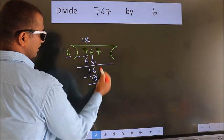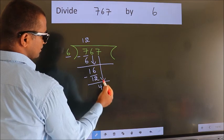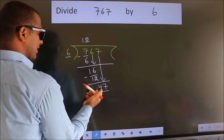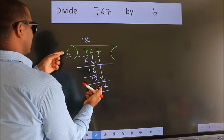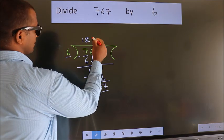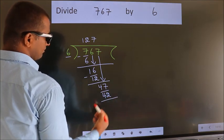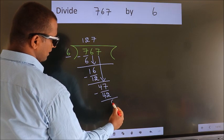After this, bring down the beside number. So, 7 down. So, 47. A number close to 47 in 6 table is 6 sevens, 42. Now, we subtract. We get 5.